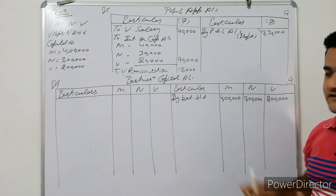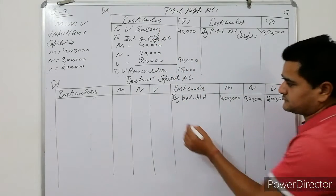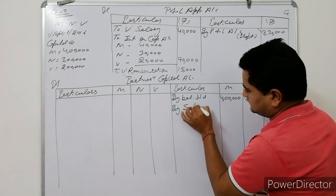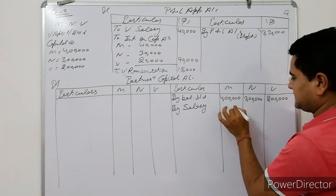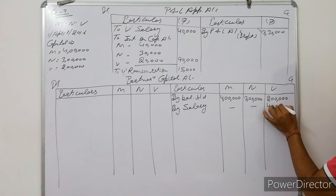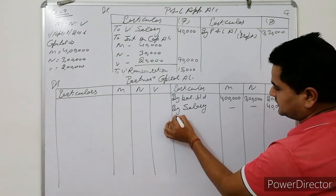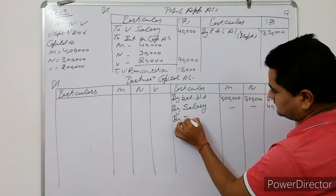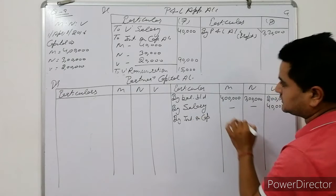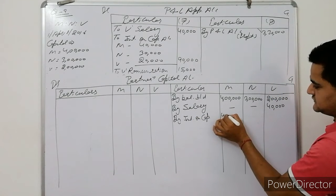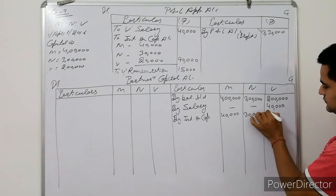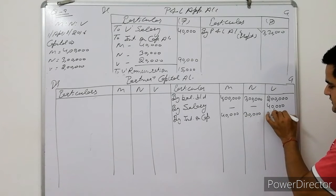Salary was on the debit side of appropriation, so it comes on the credit side of capital. Weibo's salary: Rs.40,000. Interest on capital: Manish Rs.40,000, Navan Rs.30,000, Weibo Rs.20,000.